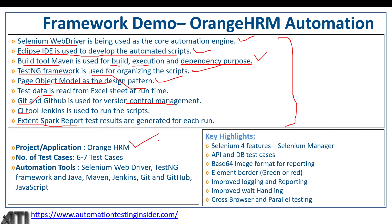The application we are going to use is OrangeHRM, which is an employee management application. In the next video I'll give an overview of the demo application. We are going to automate around six to seven test cases in this framework — maybe more — because the main idea is how we are going to construct the framework. The tools used include Selenium WebDriver, TestNG, Java, Maven, Jenkins, Git, GitHub, and some JavaScript.